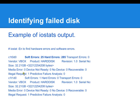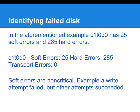All this information will be flooding the screen, and you'll have to make an effort to see where one disk begins and the other one ends. For example, it would be quite a bit of effort to distinguish C1T0D0 from C1T1D0, which would be easy to miss. So in the output, we saw that C1T0D0 has 25 soft errors and 285 hard errors.